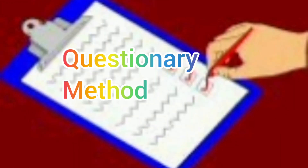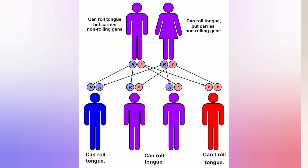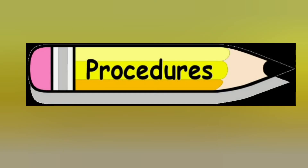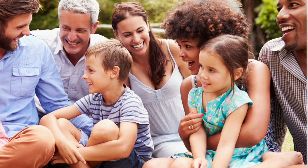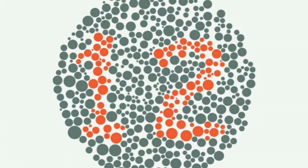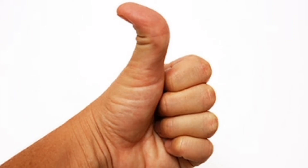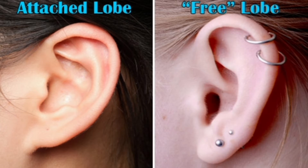For this activity, the requirements are the questionary method — you have to ask questions about a particular disorder or trait running in a family with a genetic disorder for more than one generation. You need pencil and paper to note down the data. The procedure is: select a family and ask questions about a monogenetic trait such as rolling of tongue, widow's peak, color blindness, blood group, hitchhiker's thumb, or dimples on the cheek.